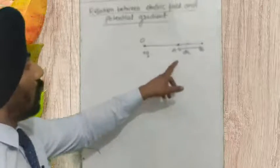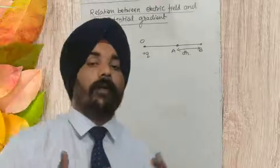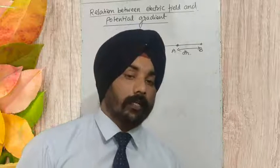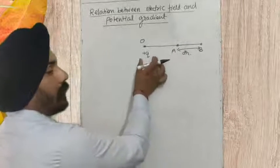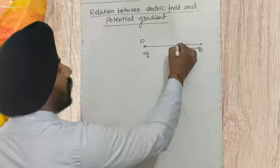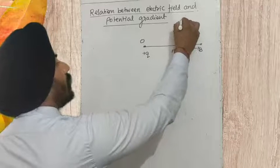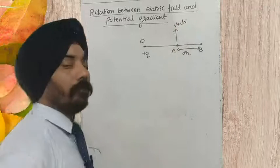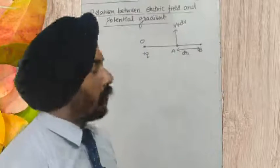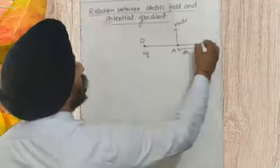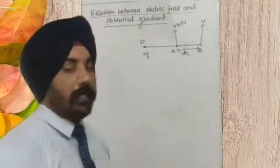As close as a point is lying to the source charge, the more will be the potential on that charge. Point A is closely lying to the source charge, so we consider that the potential at point A is V plus dV. Point B is lying a little away from charge Q, so the potential at point B is V.